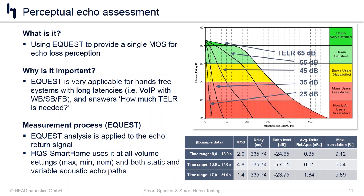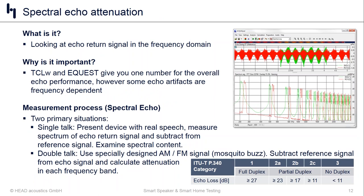Example data from an eQuest test gives us, for each 4-second chunk of audio, an overall MOS score, delays, echo level values, relative approach numbers, and max correlation. It's much more sophisticated than just looking at echo level — it's a pretty sophisticated MOS metric. The spectral echo attenuation test is very suitable for developers and engineers as a diagnostic tool. Where TCLW and eQuest give you one overall number, they don't tell you why the device is performing well or not.